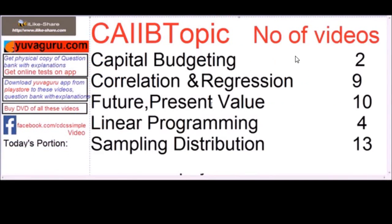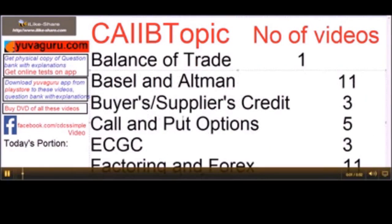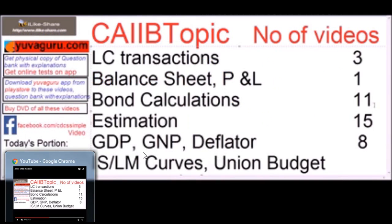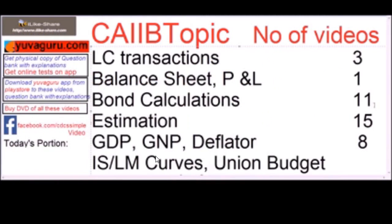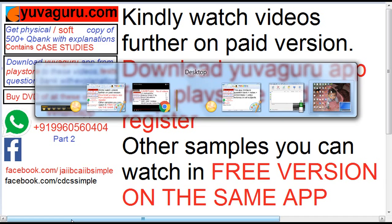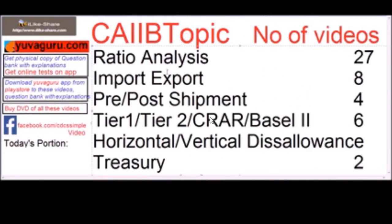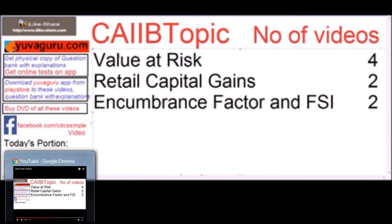These are the topics covered in the videos. For capital budgeting: correlation, future and present values, linear programming, sampling distribution, balance of trade, buyer's credit, supplier's credit, call and put options, ECGC, factoring, LC transactions, balance sheets, P&L, bond calculations, estimation, GDP, GDP deflator, ISLM curve, union budget, Keynes' theory, ratio analysis, import-export, pre- and post-shipment, tier 1 and tier 2 capital, CRAR, Basel horizontal and vertical disallowances, value at risk, retail capital gains, income rents and expenses.